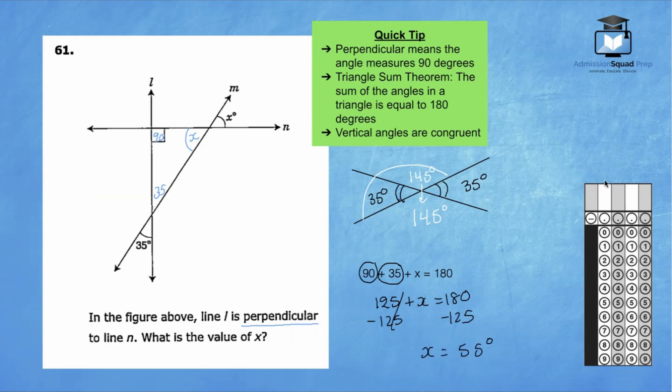Since this answer is a positive number, we will get started right here in the white box and we will write the number 55 and then we will bubble in 55 right here at the bottom. We want both fives to be bubbled in. Please remember to leave these two columns blank. Let's try out 62.